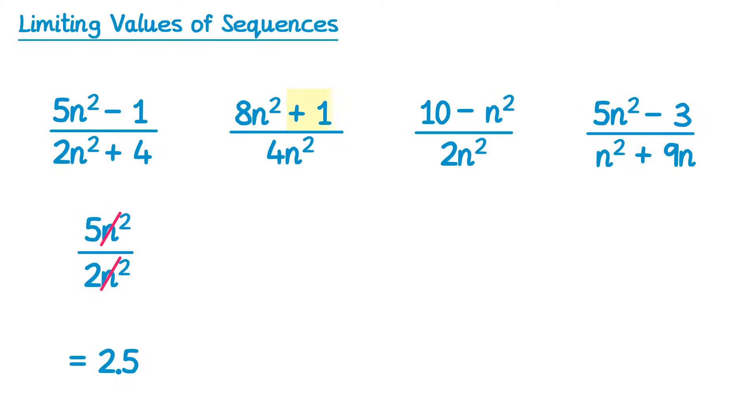For the next one, it's the plus 1, so we have 8n squared over 4n squared. Cancel out the n squareds and we have 8 over 4, which is 2. For the next one, be careful with the negatives, it's just the 10 here, so it's negative n squared over 2n squared. Cancel out the n squareds and you have negative 1 half, or negative 0.5.